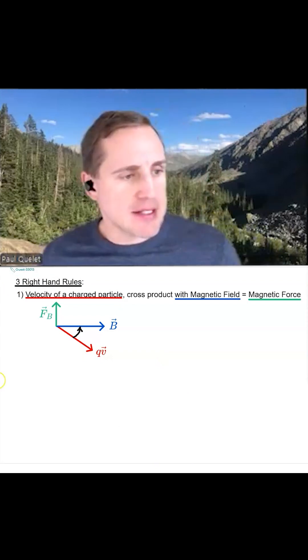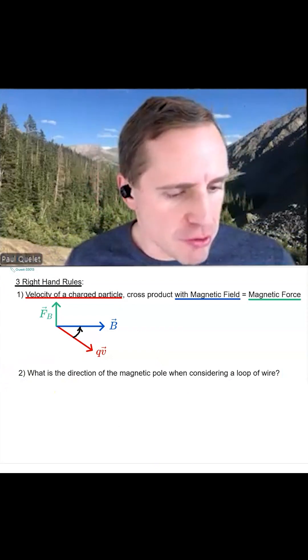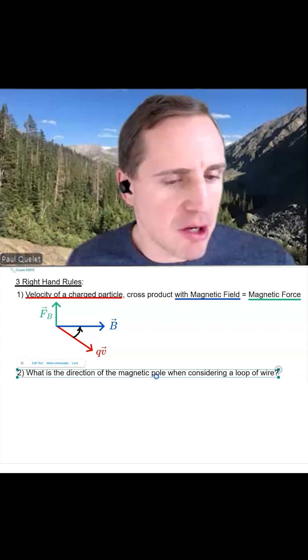Right hand rule two is going to be asking the following question. What is the direction of the magnetic pole when considering a loop of wire?